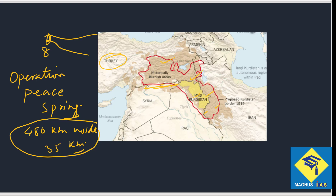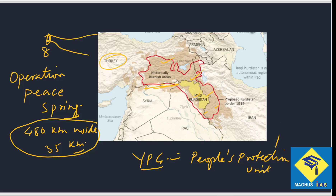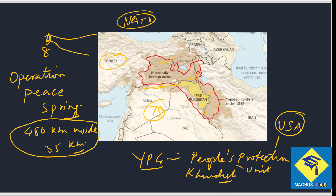The Syrian Kurds have formed a military group known as the People's Protection Unit, or YPG. They were closely allied with the USA and played a very important role in Syria's war against the Islamic State. The Kurds were trained by the USA, and importantly, Turkey is also a member of NATO.